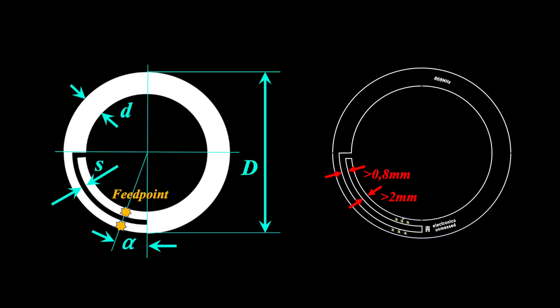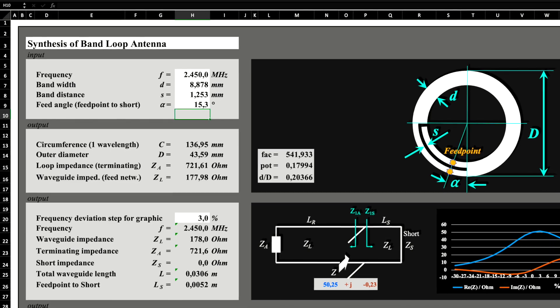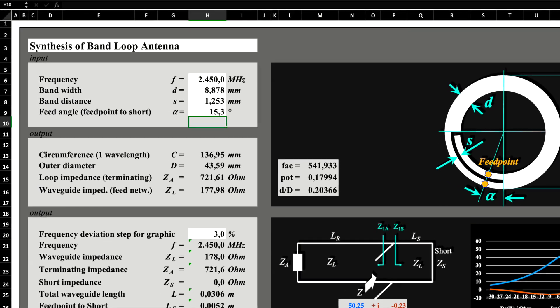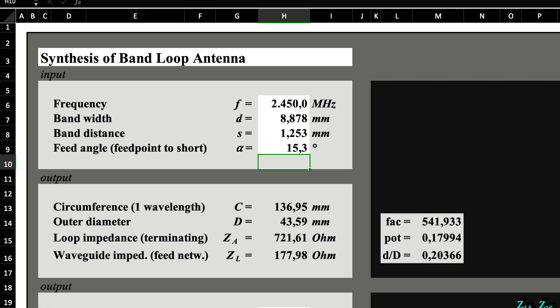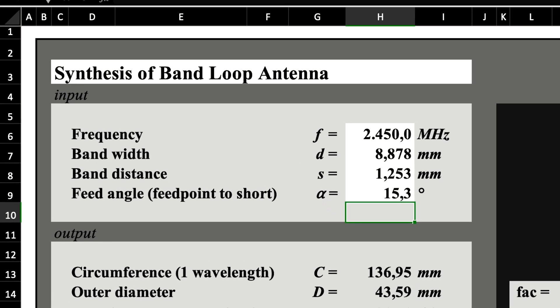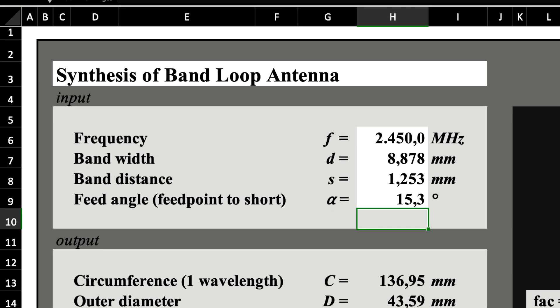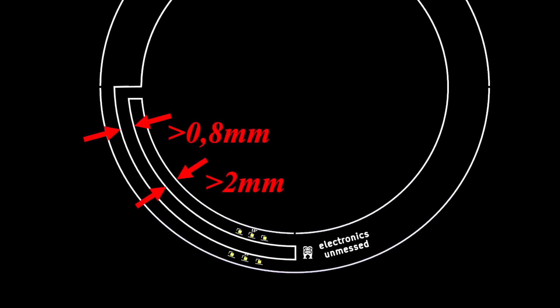We computed antenna dimensions for 2450 MHz, where the slot for the matching network is more than 1 mm wide. The entire conductive band is more than 8 mm, ensuring the two matching networks' conductors are wider than 3 mm. So, we are definitely living within the production limitations given.